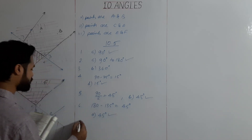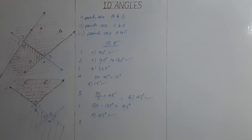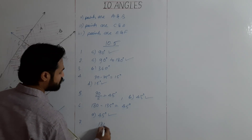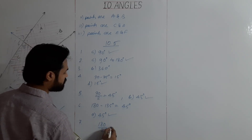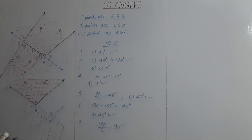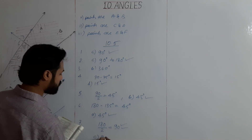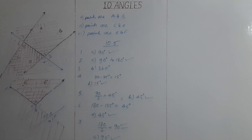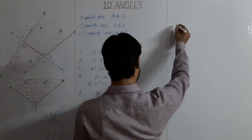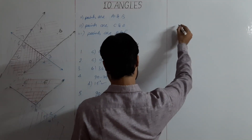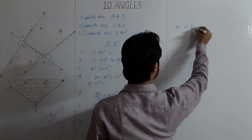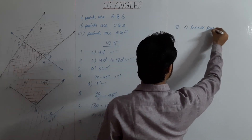Question 7: the angle which equals its supplement. Supplement means total is 180 degrees. Half of 180 is 90, so both angles are 90 degrees. Answer is C, 90 degrees. Question 8: the special name of two adjacent angles whose sum is 180 degrees — that is a linear pair. Answer is C, linear pair.